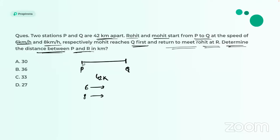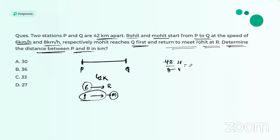First, they start at the same point racing toward Q. One person reaches Q first — that is Mohit. 42 kilometers is completed by Mohit at 8 km/h, so the time taken is 42 divided by 8, which is 21/4 = 5.25 hours.